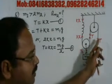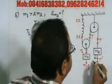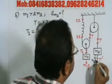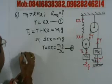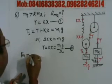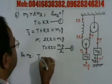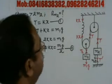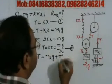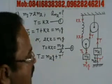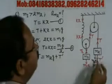For m2, the upward force is T. So T must be equal to m2g plus T_dash. This is the equilibrium condition for m2.